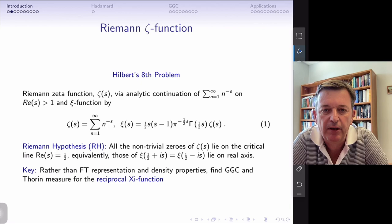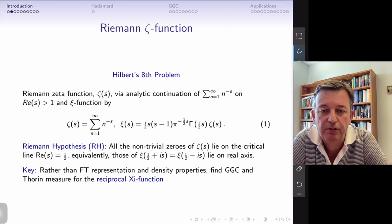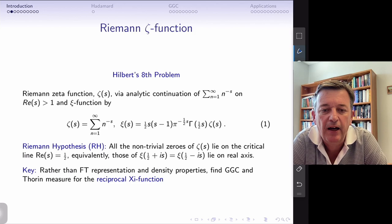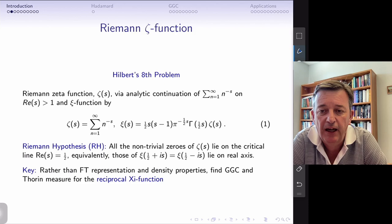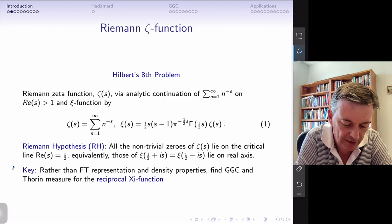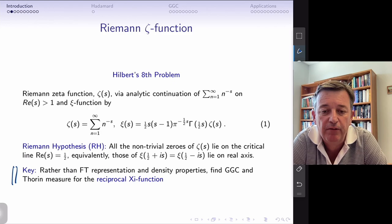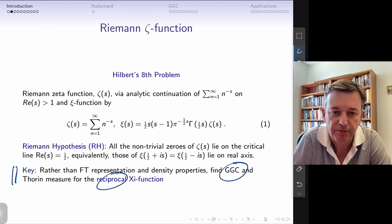There's a definition of the zeta function, the psi function, and the Riemann hypothesis: do all the non-trivial zeros lie on the critical line real s equals one-half? Equivalently, if we look at the regularized psi function, do those zeros lie on the real axis? Two approaches tackle this: one is directly looking at the density — the Riemann-Polya approach — or alternatively looking at the reciprocal function and Thorin's condition. The key insight is that it's much better to understand Generalized Gamma Convolutions and the reciprocal zeta function.